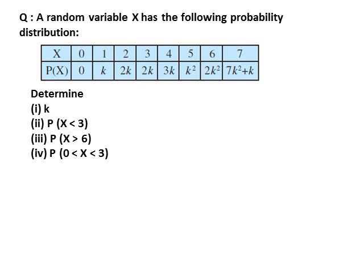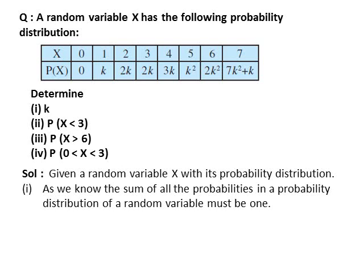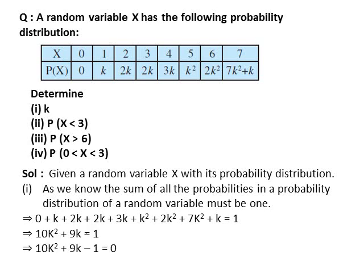Next question: a random variable x has the following probability distribution. Using this information, determine k, P(x<3), P(x>6), and P(0<x<3). We know that the sum of all probabilities in a probability distribution equals 1. In this distribution, the sum of all probabilities equals 10k² + 9k. So 10k² + 9k = 1, which implies 10k² + 9k − 1 = 0.